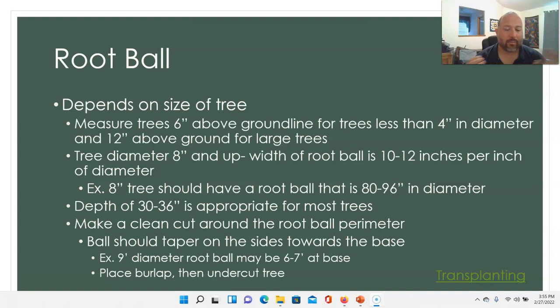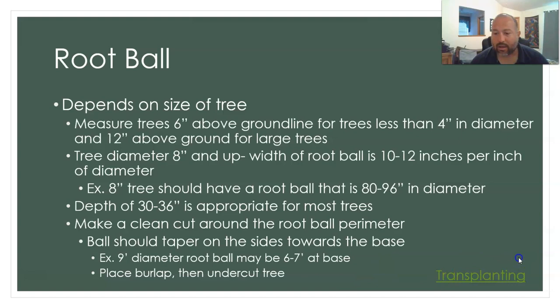For balled and burlapped trees, after shaping the root ball, place the burlap and tie it with twine, mesh, or a wire basket, then undercut the tree to remove it from the ground.